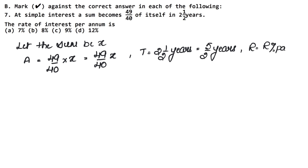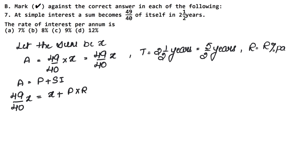Since we have the amount value, we use the amount formula: Amount = Principal + Simple Interest. So 49 upon 40 x equals principal x plus the simple interest formula, which is P into R into T upon 100.